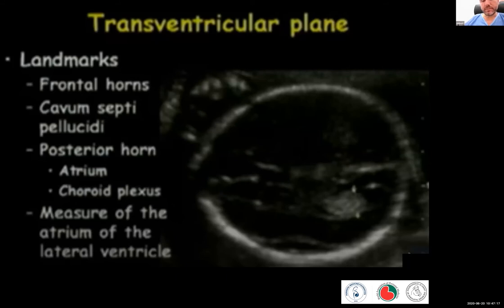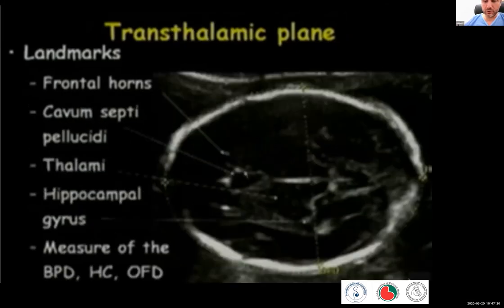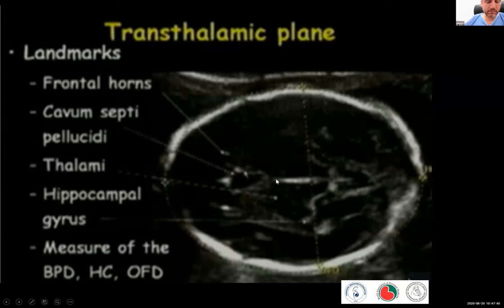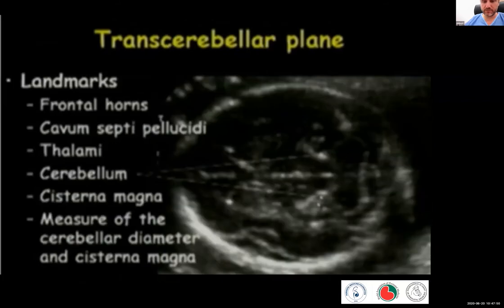There is a very interesting lecture presentation about how to assess the ventricles and what is the importance of not having normal measurements. Going a little bit lower, you get a view of the transthalamic plane through the thalami of the fetal brain, where you can again check the frontal horns, the cavum septum pellucidum, the thalami, and some parts of the hippocampal gyrus, and do a proper measurement of the fetal head diameters. Finally, through the cerebellum, you can check the anatomy, check the vermis, and measure the cisterna magna.